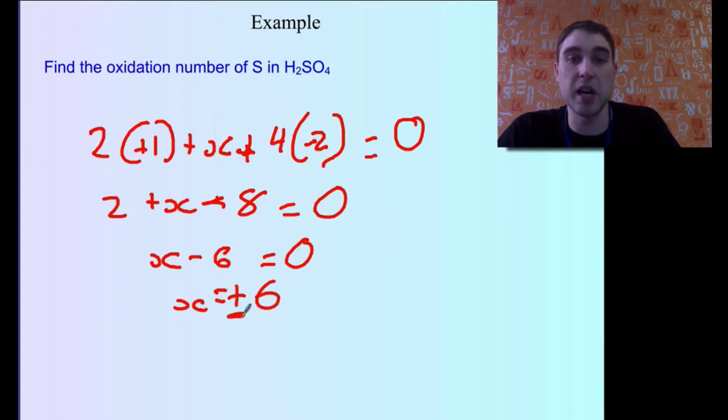So X minus 6 equals 0. So then X equals plus 6. Make sure you always put the sign. That's very important. So in that case the oxidation number of sulfur in sulfuric acid is plus 6. And the way we represent that is we draw that on top. So plus 6 up there.